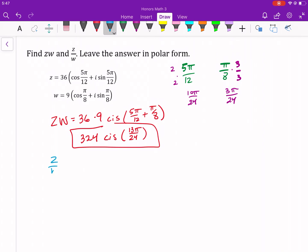And then just dividing, you'll do 36 divided by 9, cis, and then you're just going to subtract those, so 10 pi 24ths minus 3 pi 24ths, which is going to give us an answer of 4 cis 7 pi over 24. There's your answer.